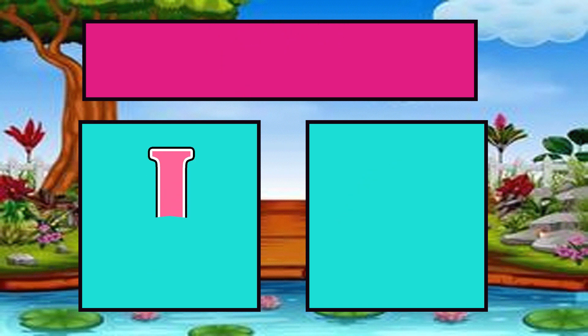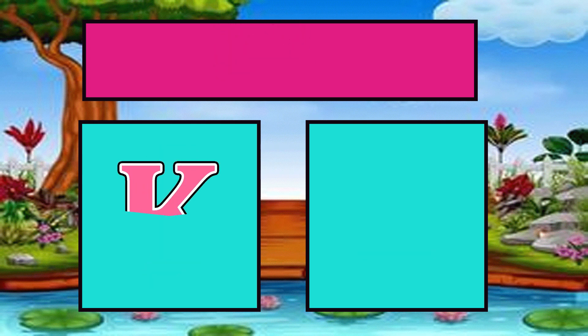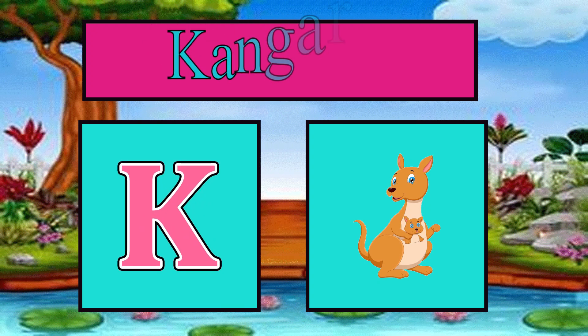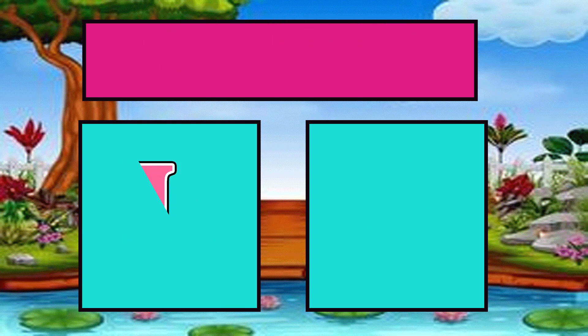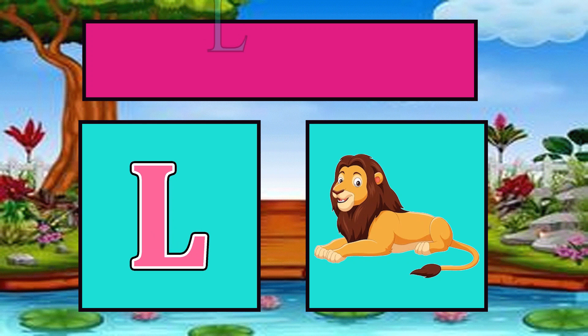J is for jump, j-j-jump. K is for kangaroo, k-k-kangaroo. L is for lion, l-l-lion.